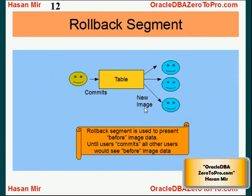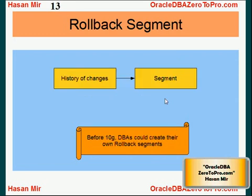So the rollback segment is used for two purposes: to help a user rollback their work, and also to create a before image of the data for everybody else. As soon as this user commits, those other users will see the new image of the table.